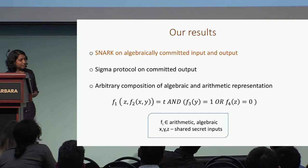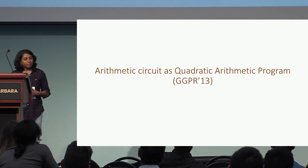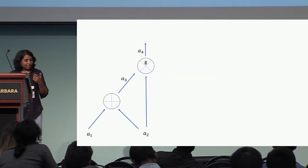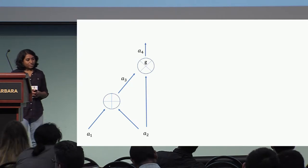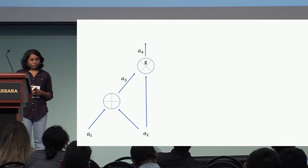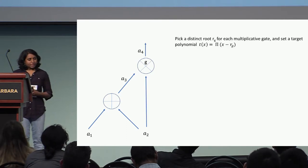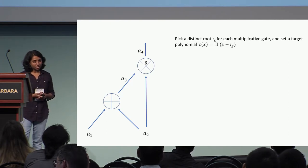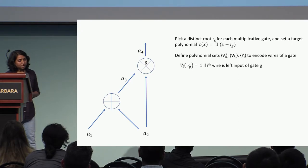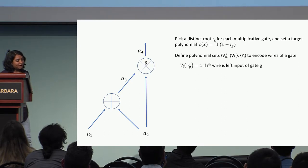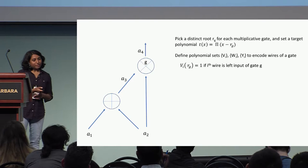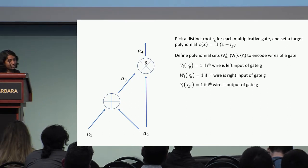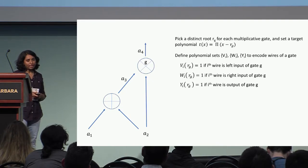I'll begin by talking about the SNARK construction on algebraically committed input and output. Our starting point is the SNARK construction based on a quadratic arithmetic program (QAP) representation of an arithmetic circuit. A QAP encodes a circuit with addition and multiplication gates over a field as follows: we pick a distinct root R_G for each multiplicative gate and define a target polynomial with roots at each R_G. We then define sets of polynomials V, W, and Y, where V handles the left input of a gate — so V_i(R_G) = 1 if the i-th wire is the left input of gate G — W handles the right input, and Y handles the output.